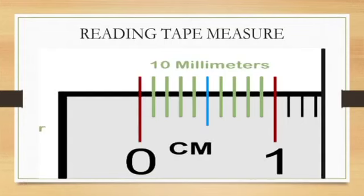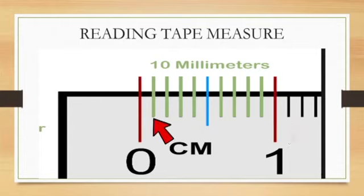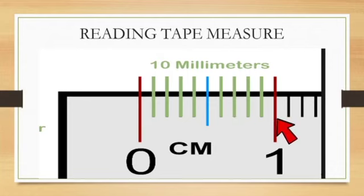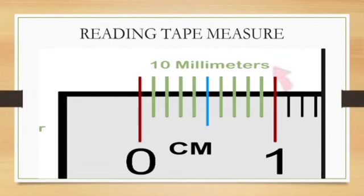When reading the tape measure, the smallest unit of measurement is one millimeter. Reading from zero, you count one, two, three, up to ten millimeters, which equals one centimeter. However, in engineering, centimeters are not used — always use millimeters or convert to meters. Avoid centimeters; always stick to millimeters or meters.